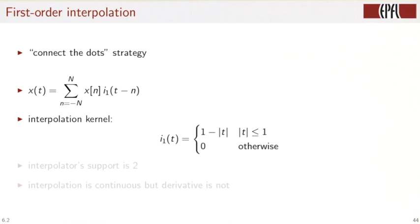x of t is now the linear combination of an interpolation kernel i1, shifted to the location of the samples and weighted by the samples xn. This interpolation kernel is also called the hat function or the triangle function.